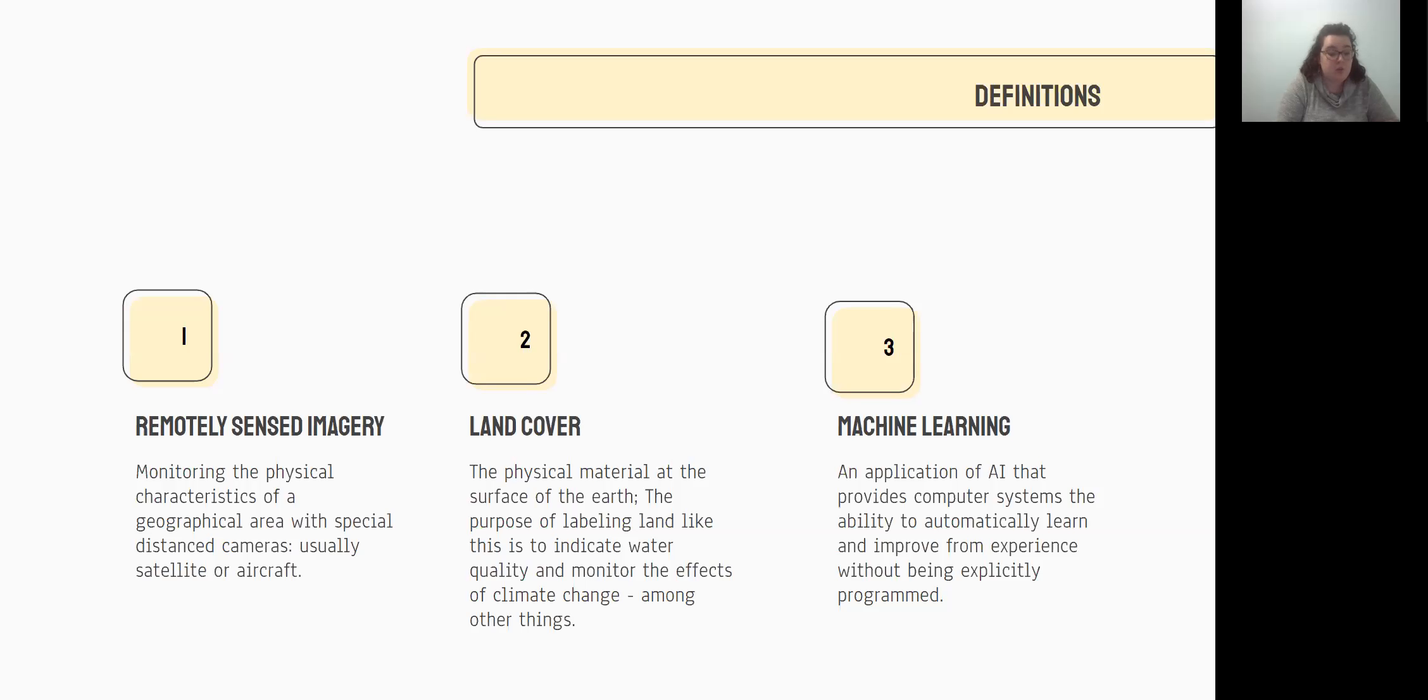One of the main issues with classifying land covers is that many surveys define similarly named categories in different ways. So for instance, there can be many definitions of forest. Often areas without trees can be classified as a forest if the intention is to replant in that area. And there can be areas with many trees that will not be classified as forests because the trees aren't growing fast enough for the definition. So the purpose of labeling land like this is because these images can indicate water quality, they can monitor the effects of climate change, they're used for wildlife management and environmental forecasting, among many other things. So you can see how this can be incredibly helpful.